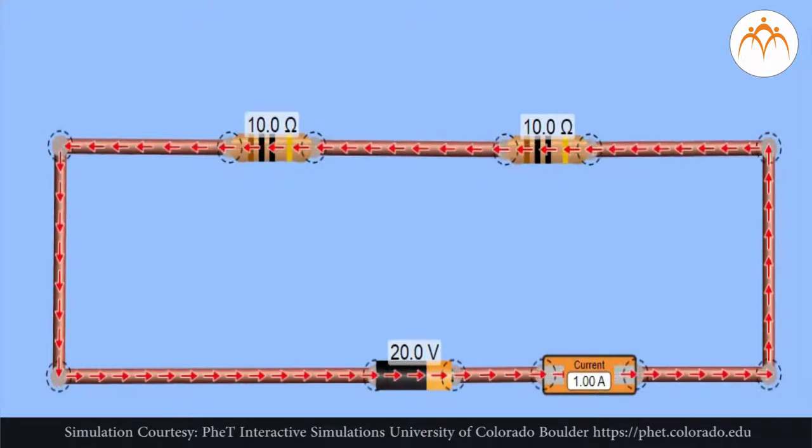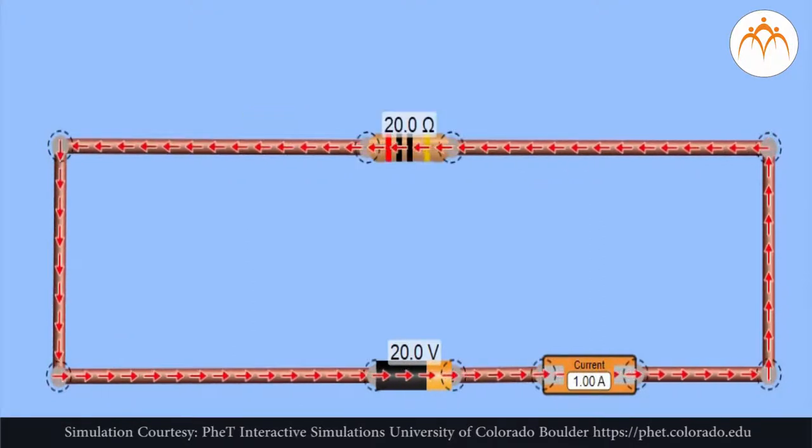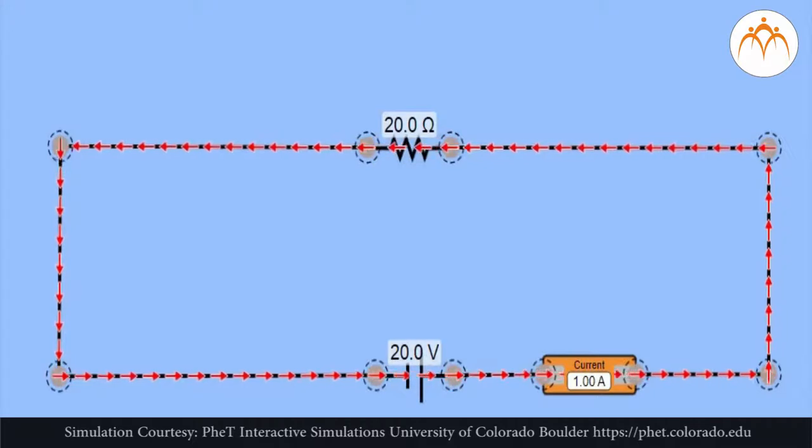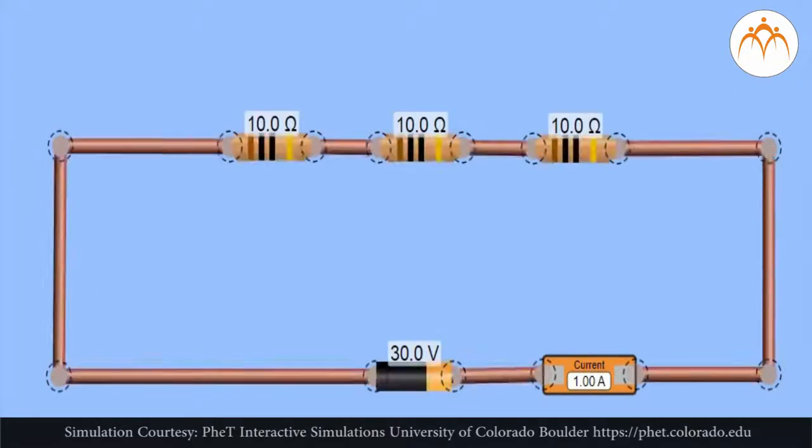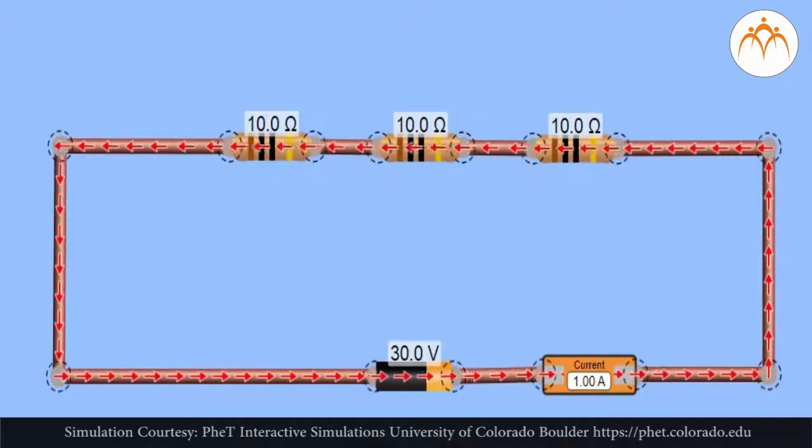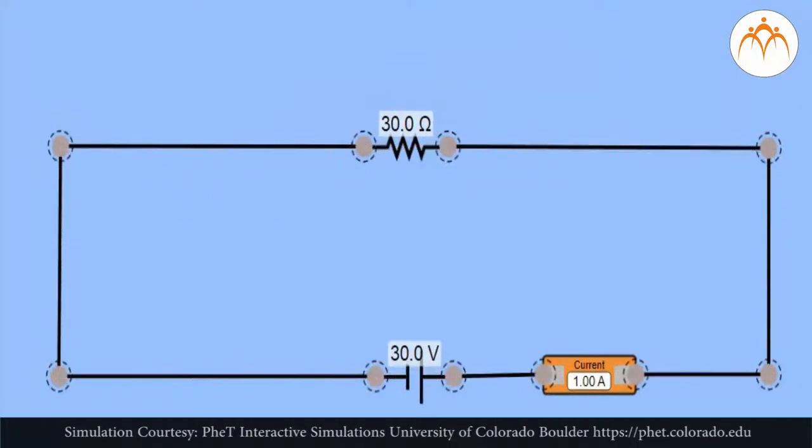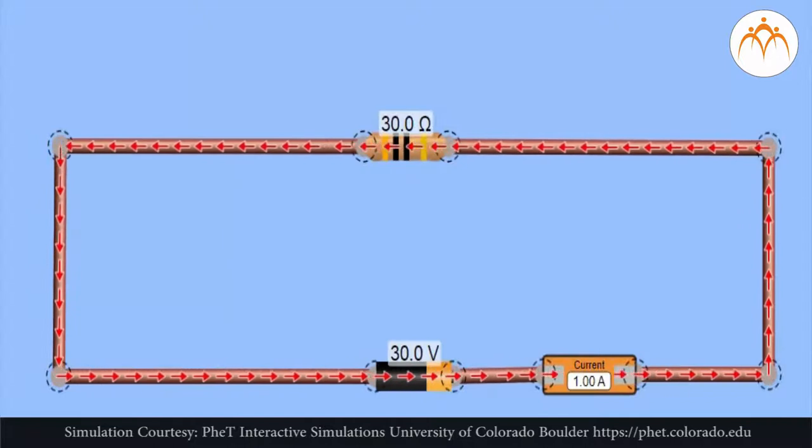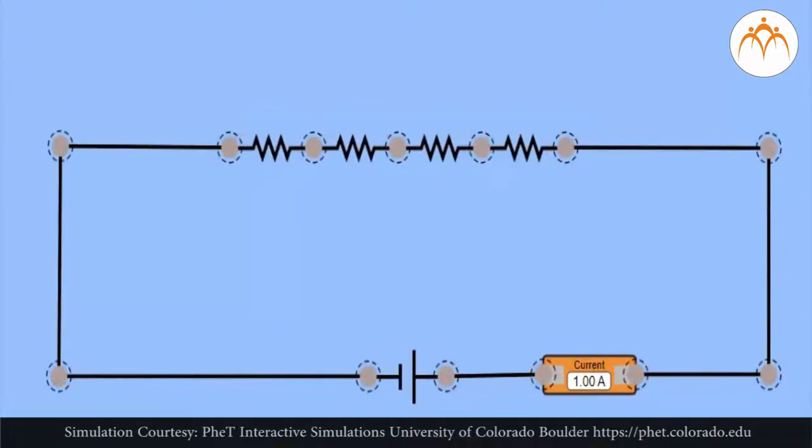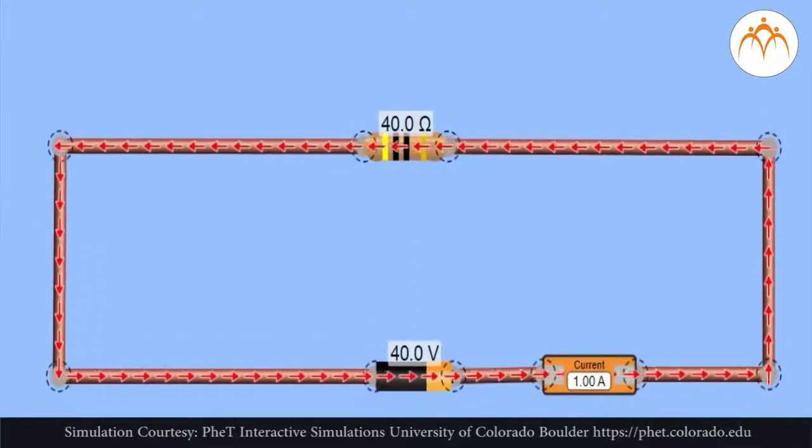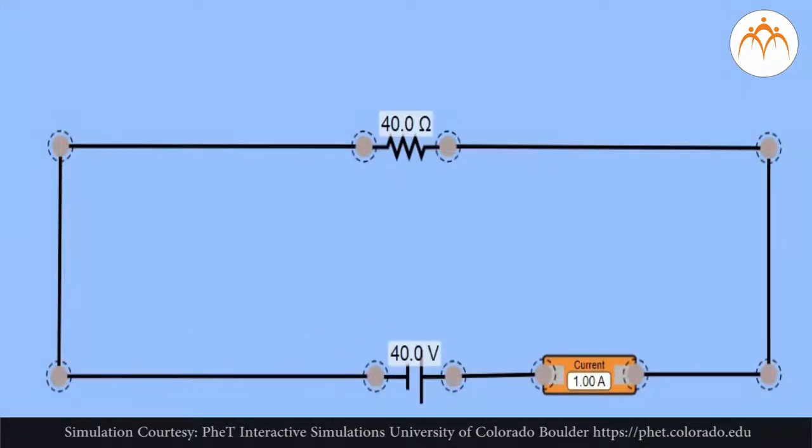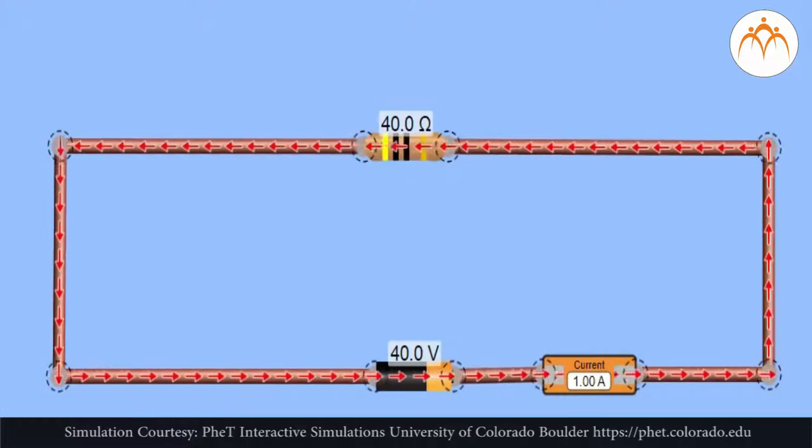The presence of two 10 ohm resistors in series would be equivalent to having one 20 ohm resistor in the circuit. The presence of three 10 ohm resistors in series would be equivalent to having one 30 ohm resistor in a circuit. And the presence of four 10 ohm resistors in series would be equivalent to having one 40 ohm resistor in the circuit. This is the concept of equivalent resistance.